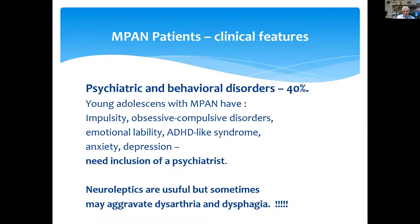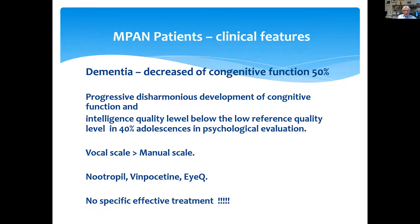Another clinical feature in my patients is psychiatric and behavioral disorders. Young adolescents have impulsivity, obsessive-compulsive disorder, emotional lability, ADHD-like syndrome, anxiety, and depression — all requiring inclusion of psychiatrists. Neuroleptics are useful but sometimes may aggravate dysarthria and dysphagia. Dementia is observed around 14–15 years of life, with progressive decline of cognitive function and intelligence quality level below reference in 40% of adolescents. Vocal scale was better than the manual scale.